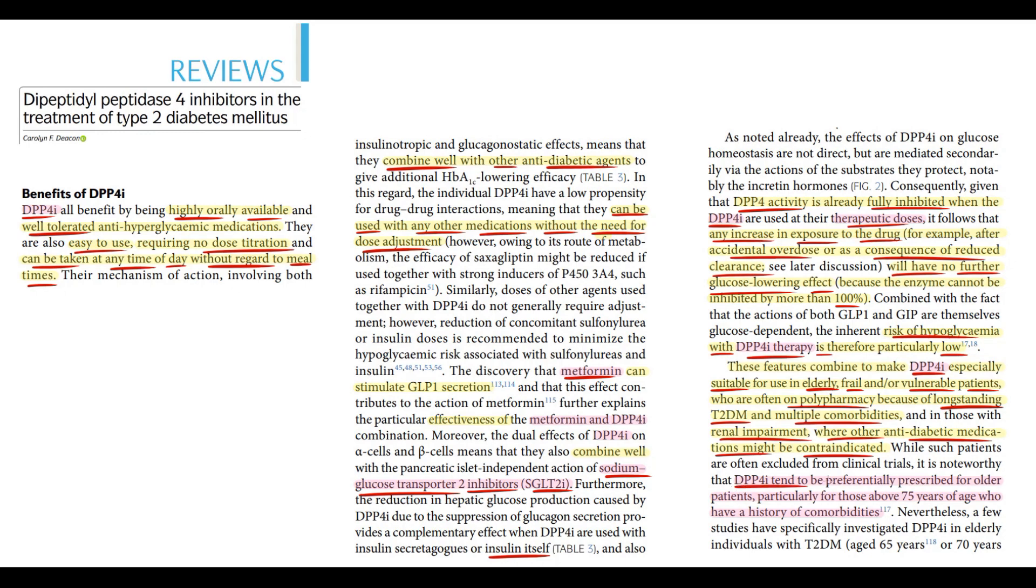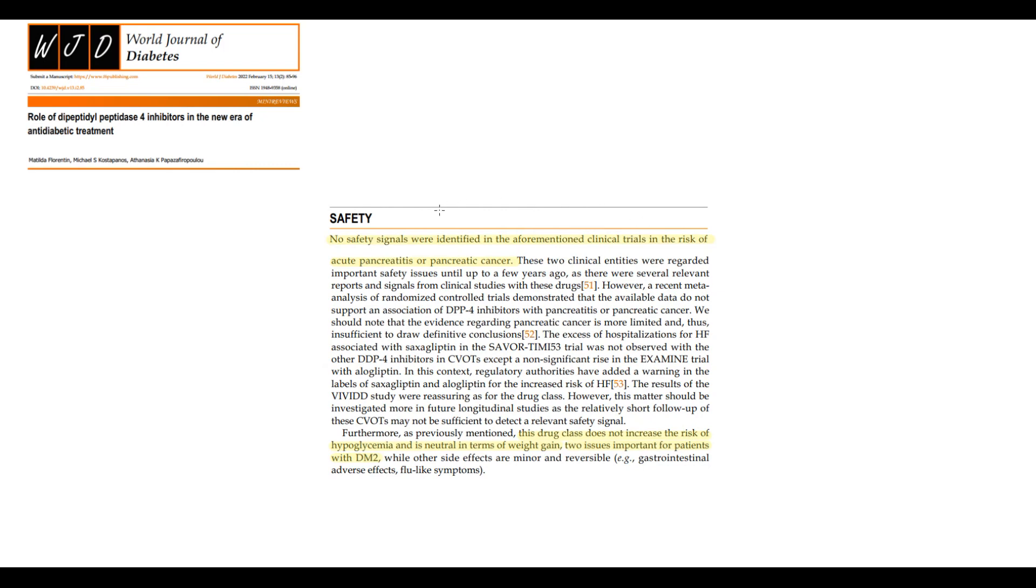So the most common category of patients that take DPP-4 inhibitors are elderly patients, usually older than 75, who have a history of comorbidities. Previously, it was suggested that DPP-4 inhibitors can cause increasing risk of acute pancreatitis or pancreatic cancer, but novel clinical trials do not show this tendency. Overall, these drugs are very safe. They do not increase the risk of hypoglycemia, and they do not cause weight gain, which is very important in treatment of diabetes type 2.